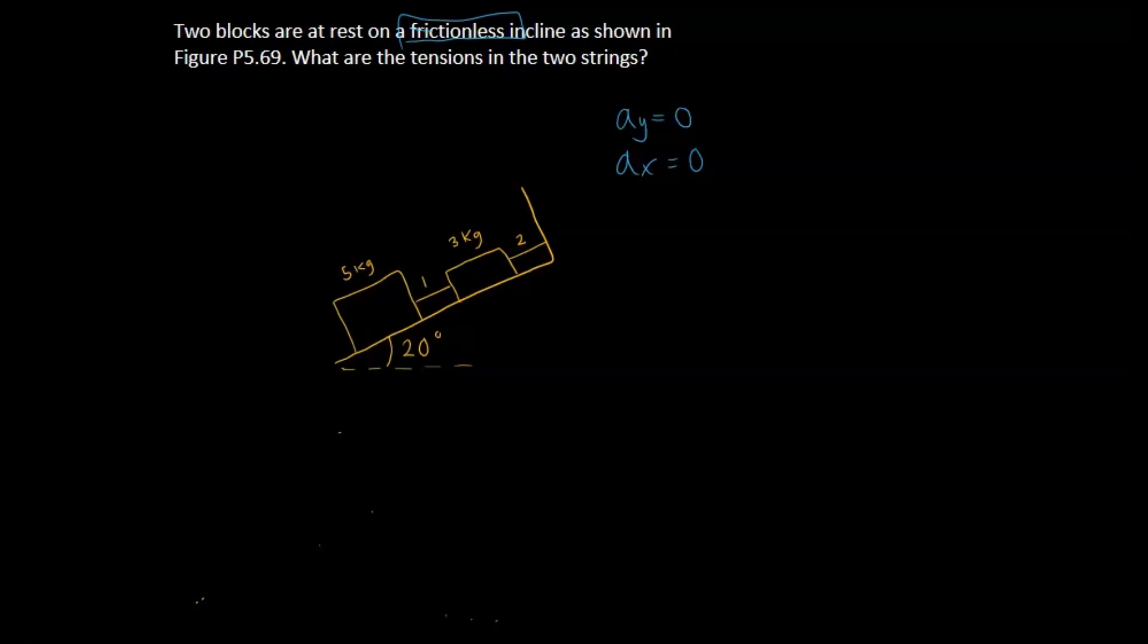We know that Fg is going to be equal to Fn in both cases here, but I don't exactly know if that's going to help us solve the problem, so let's look at the x direction. Because the acceleration in the x direction is equal to 0, the positives must mitigate the negatives. Whatever force we have in the positive or whatever forces bring the blocks down on the incline has to be counteracted by the force of tension of the strings.